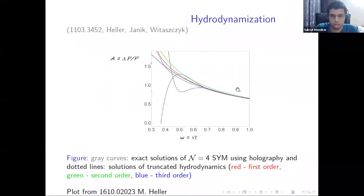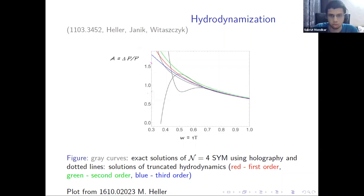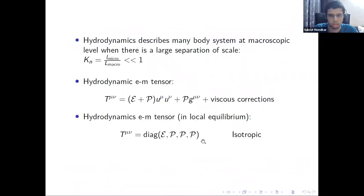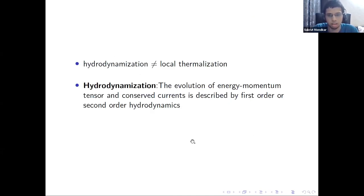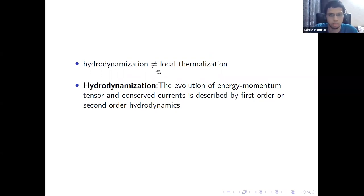Local thermalization or equilibration means there is no anisotropy — in equilibrium, the energy-momentum tensor is isotropic, meaning A becomes 0. From this plot, the time scale for thermalization would be very large compared to the hydrodynamization time scale. Hydrodynamization means the evolution of the energy-momentum tensor is described by first or second order hydrodynamics. Hydrodynamization is quite different from local thermalization or equilibration.